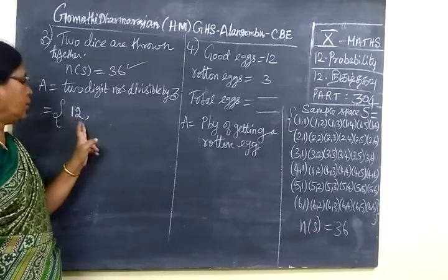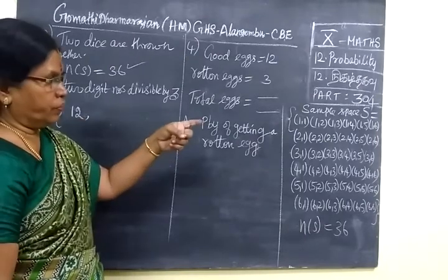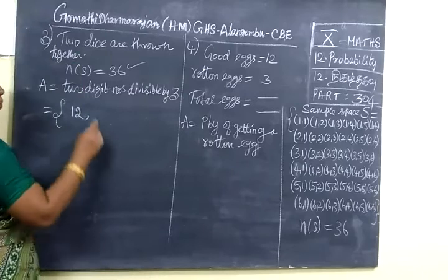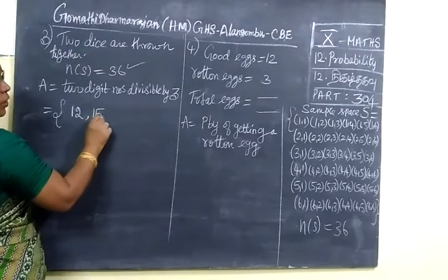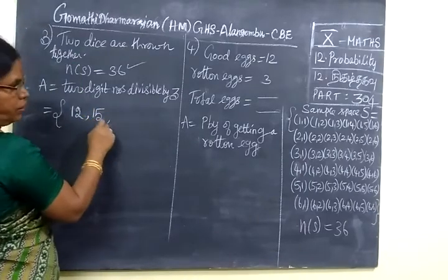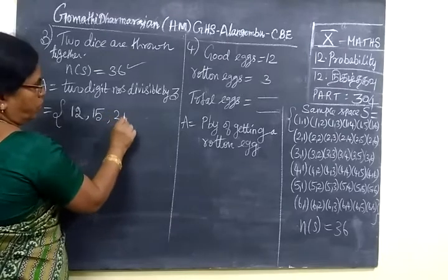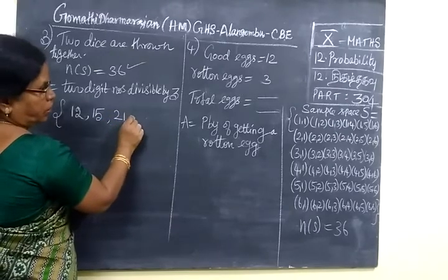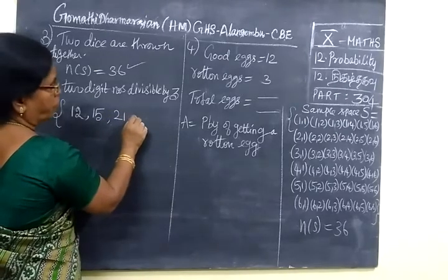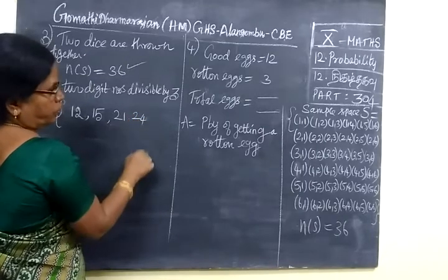So when it turned up together it forms 12. So in the first row, one more number: 1, 5 means 15. Then second row 21, then 24. That's all.